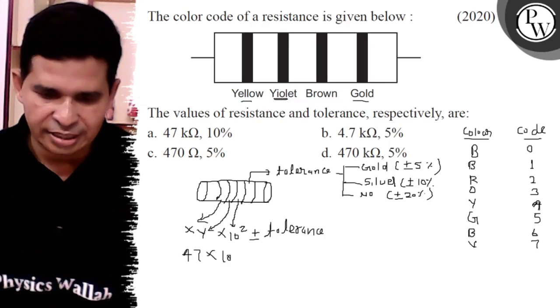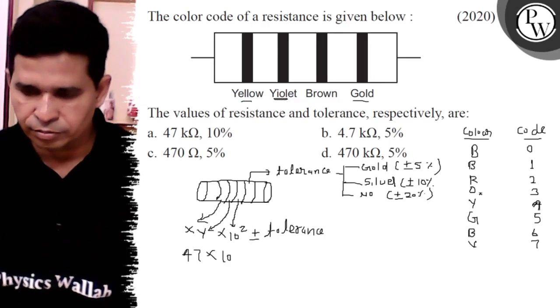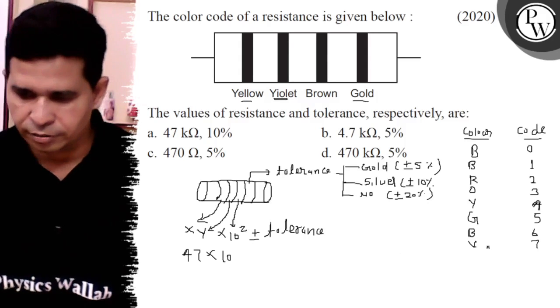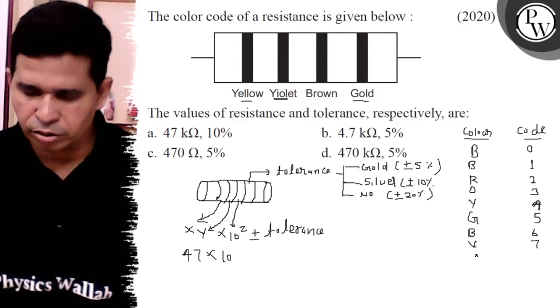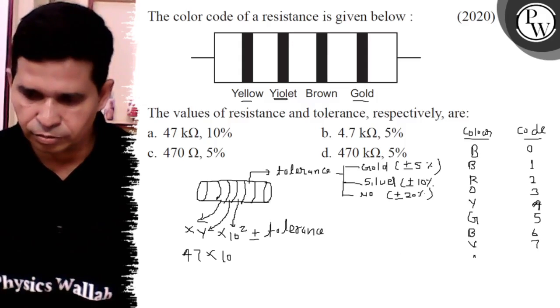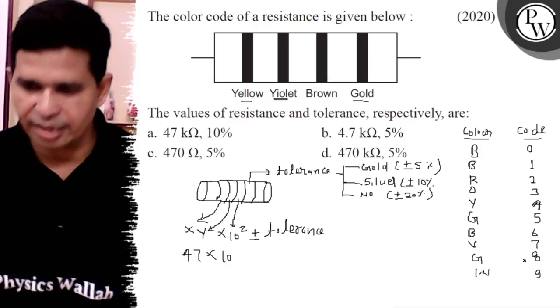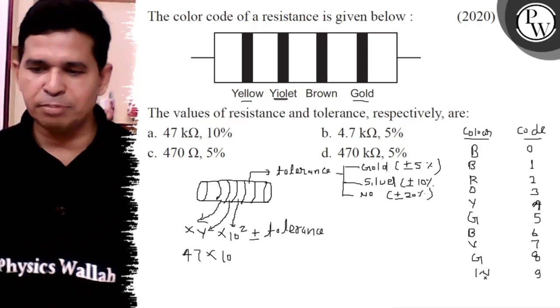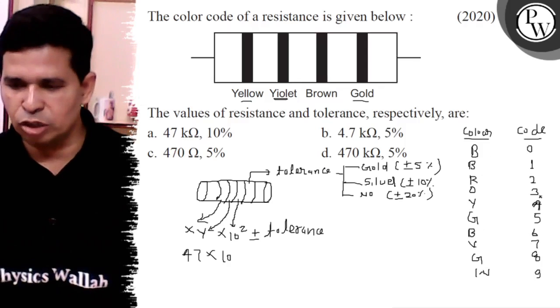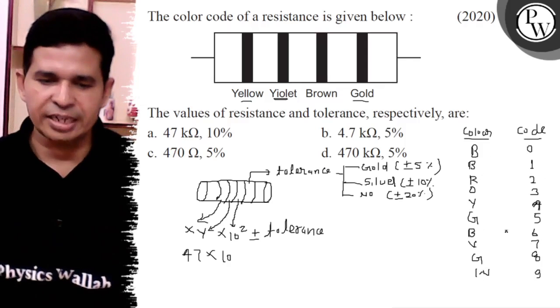Now what is the 10 to the power? Brown is 1, gray is 8, and white have 9. The mnemonic is: BB, red, great, Britain, very good woman - 0, 1, 2, 3, 4, 5, 6, 7, 8, 9.